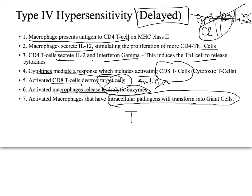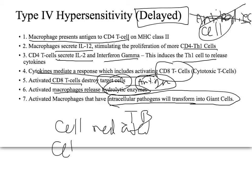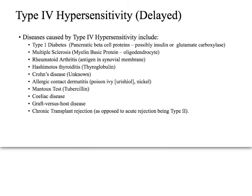What makes type 4 abnormal is that it's one cell attacking another cell — the antigen is one of your own cells. In type 1 diabetes, the pancreatic beta cells are being attacked; the antigen could be a cellular protein, insulin itself, or glutamate decarboxylase — various theories exist and all three could be true in different people.